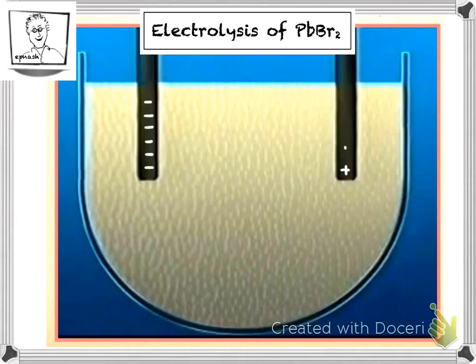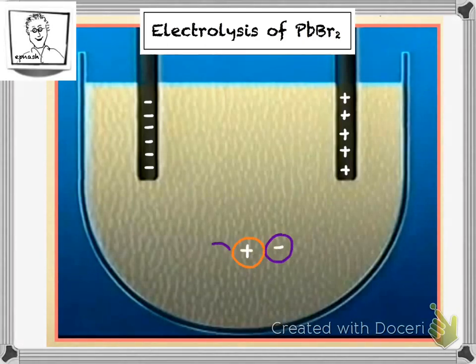First of all, you need to get two conductive materials and connect them to a power supply. These are then charged, one negative and one positive.